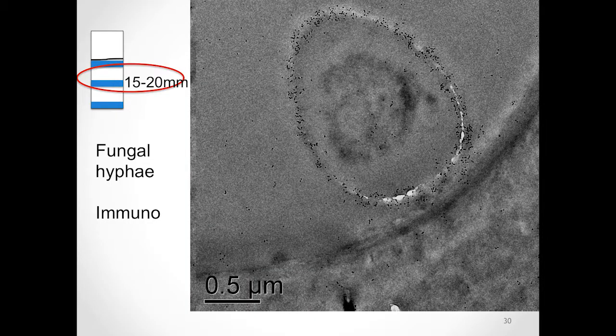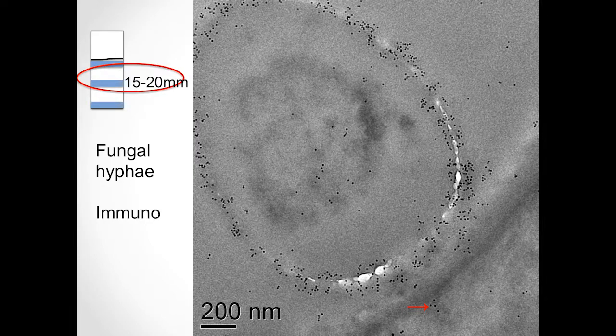One more image: hyphae in cross section with immunolabel. If we look at a close-up, it appears that clusters of our enzyme of interest are in fact moving into the plant cell wall.